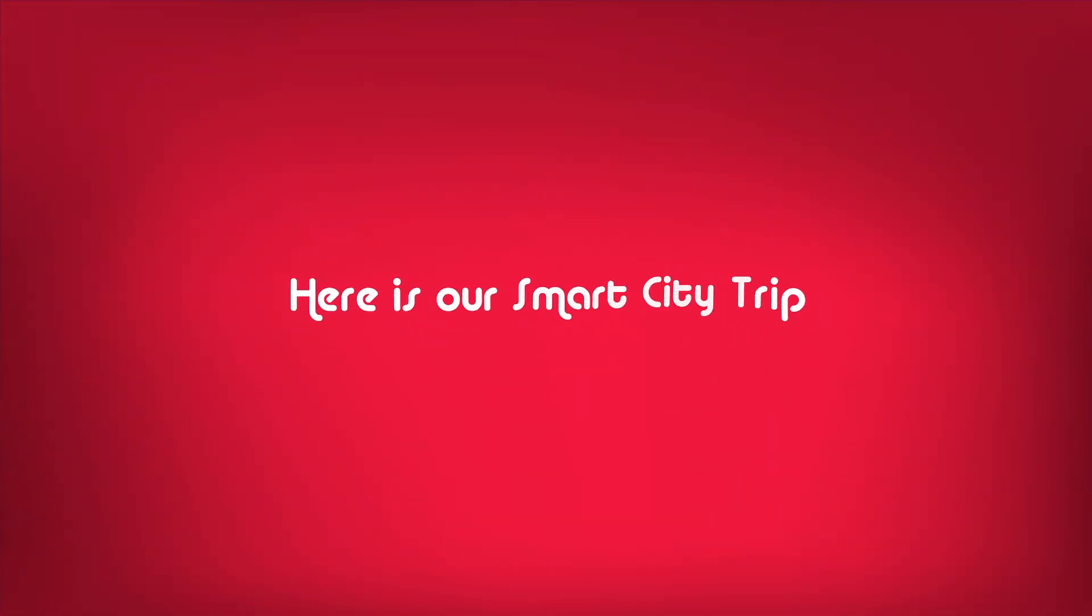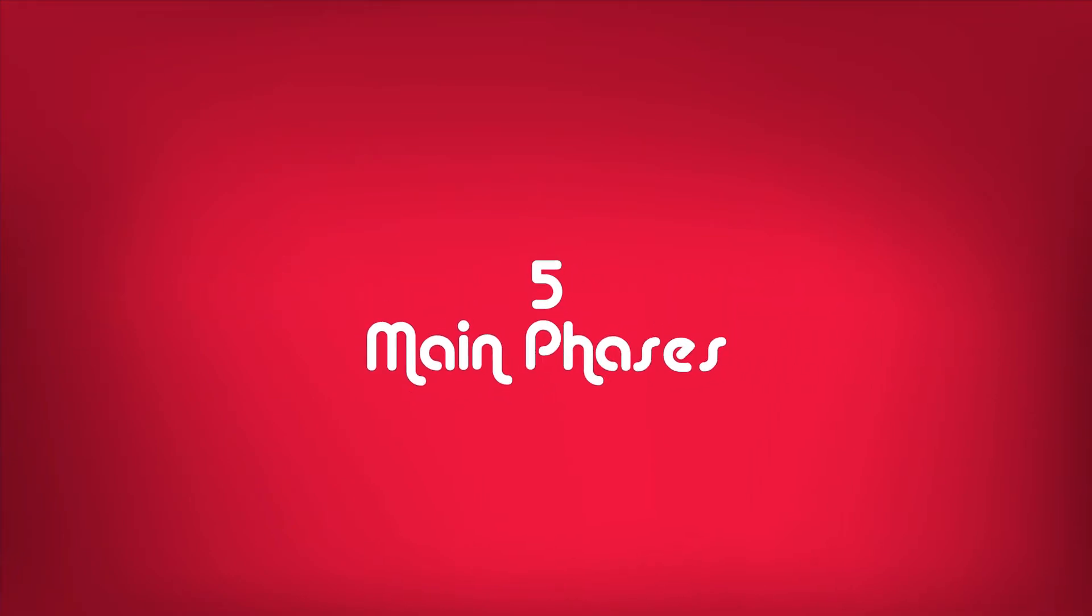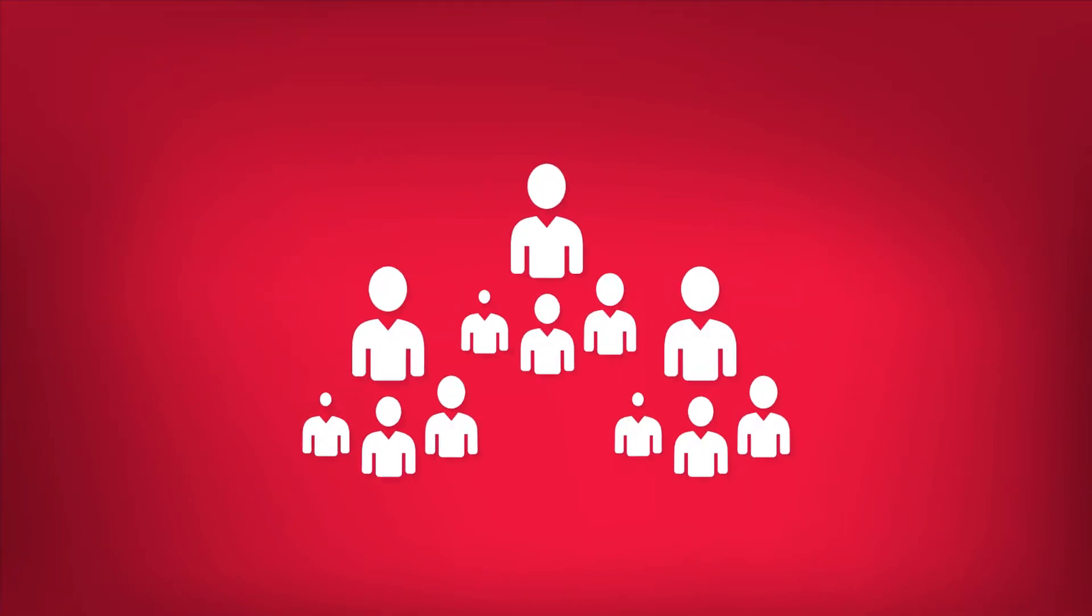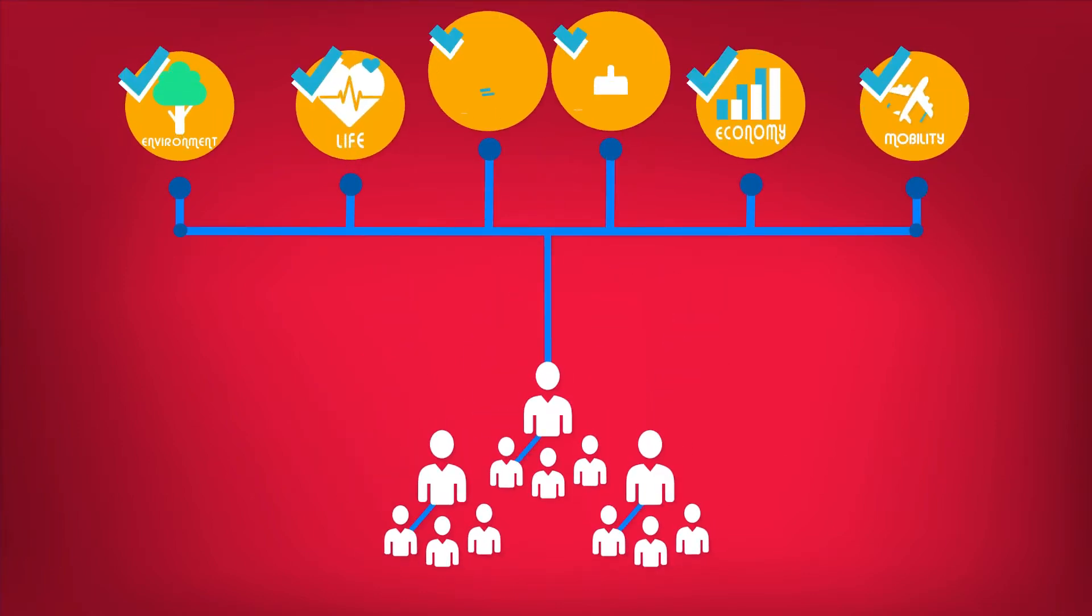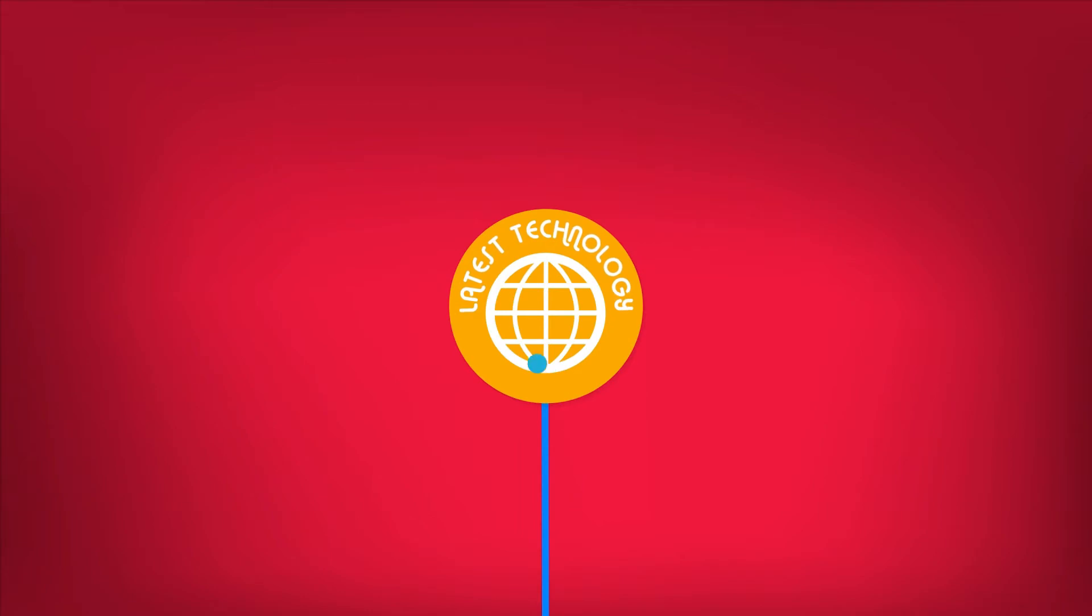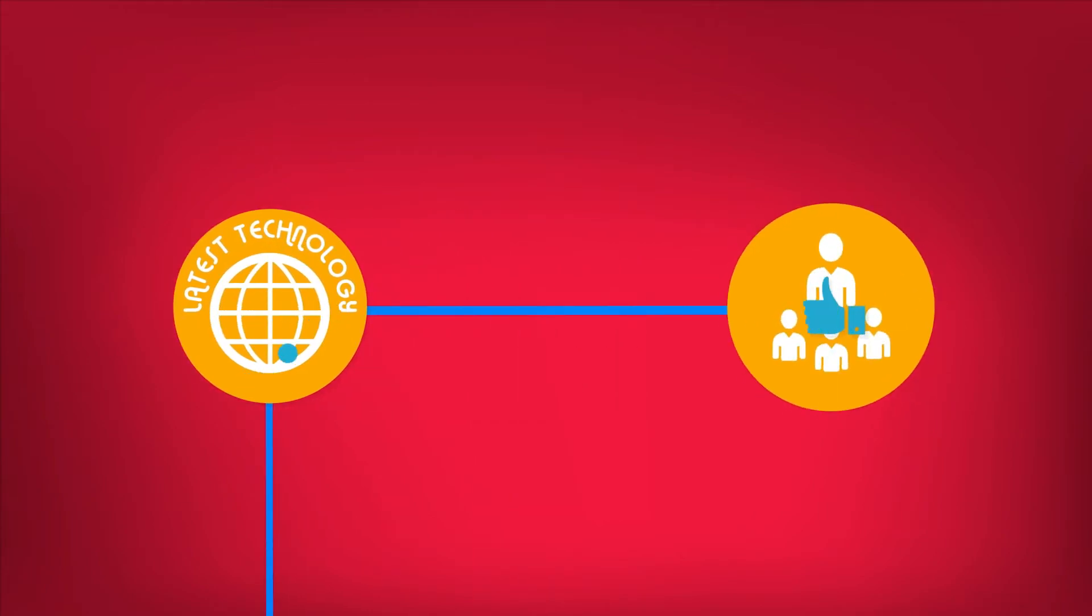Here is our smart city trip. Five main phases have been identified to create a roadmap that will integrate the needs of stakeholders in city management of Istanbul so that those needs can be met more effectively and the living standards of all individuals will increase with the latest technology available.